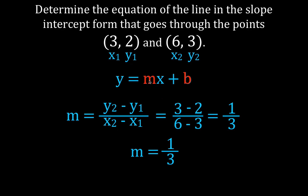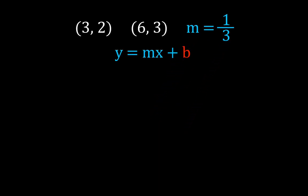Now we have the slope but we need b. We're going to calculate b, the y-intercept. We choose one of our two points, plug the values in for x, y, and m — because now we know x and y from the chosen point, and we have m which we calculated in the previous step — and then we can solve for b to get the y-intercept.